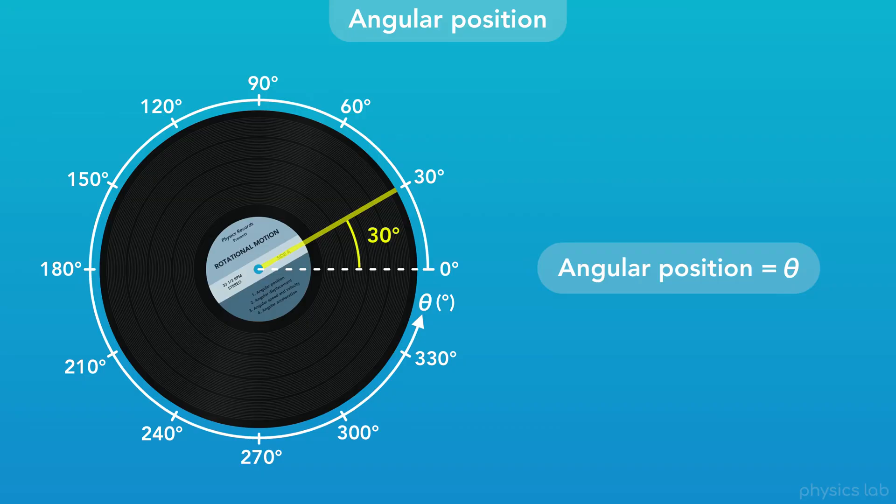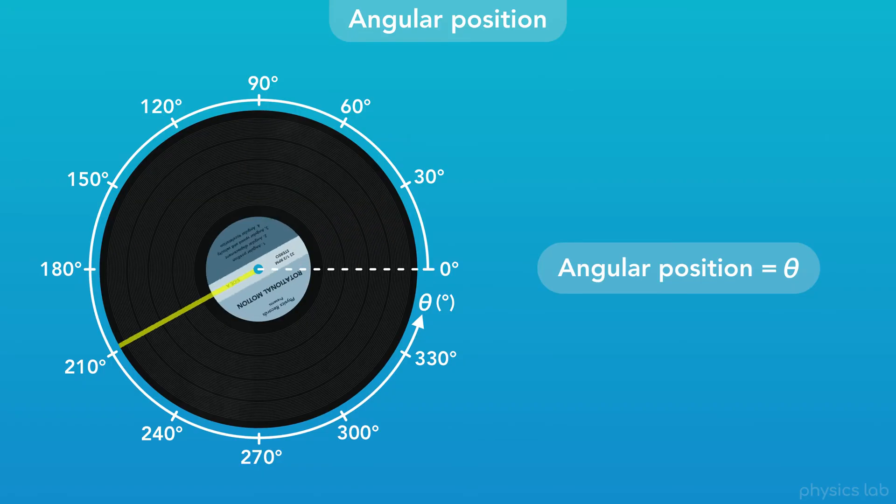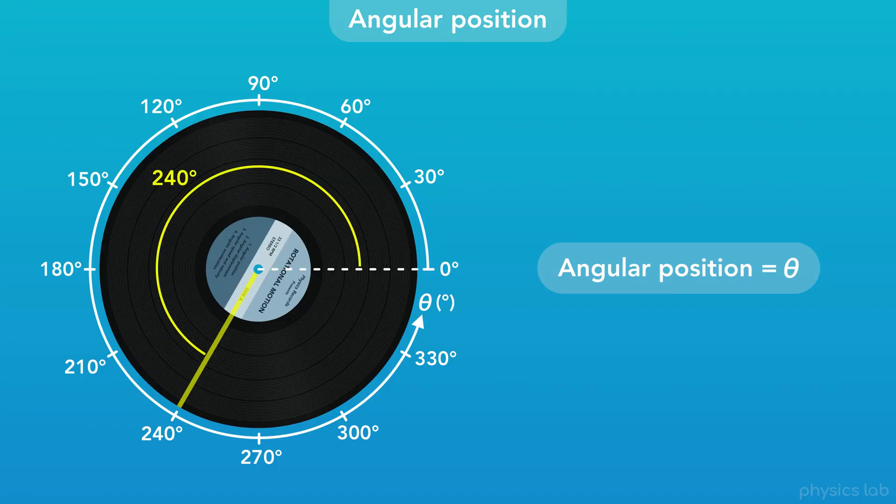Here the angular position of the record would be 30 degrees. And here the position would be 240 degrees. Remember, you can think of the angular position of the record as the angle between this line at the zero point and the line at the new position. Even if that angle is greater than 180 degrees, we still measure it the same way.